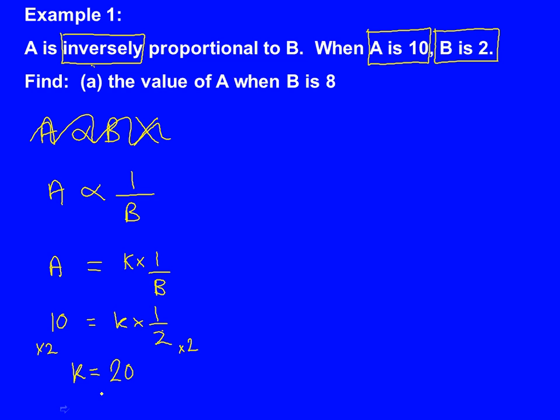Now I can rewrite this formula and put my number for K, which is 20. So my main formula for the question will be A equals 20 times 1 over B. This is the formula I'm going to use to answer part A. Part A says, find the value of A when B is 8. So all we need to do is take this formula and put in the number 8 as B.